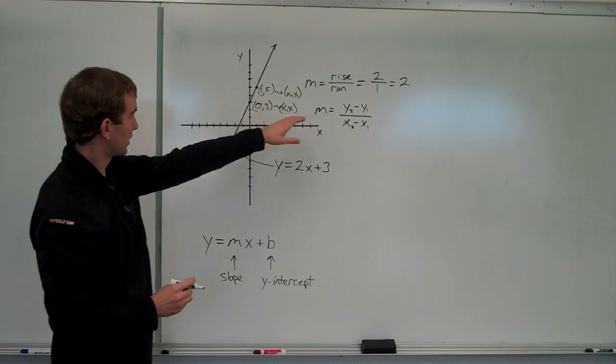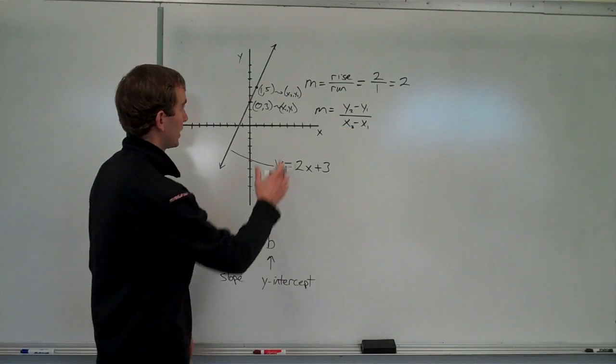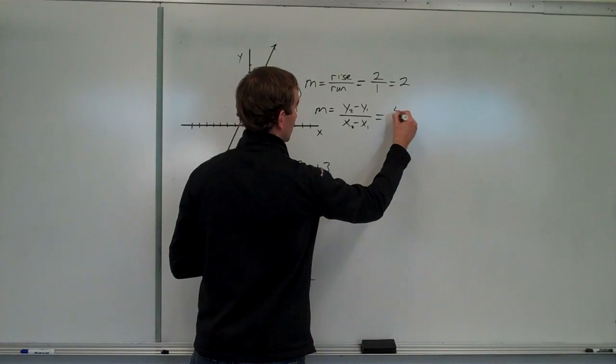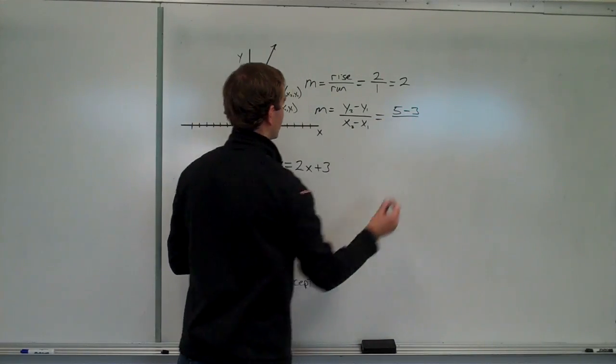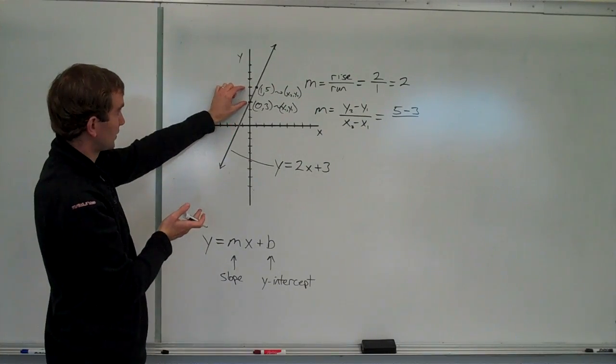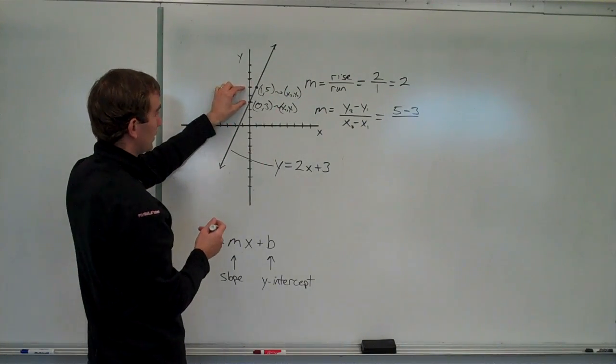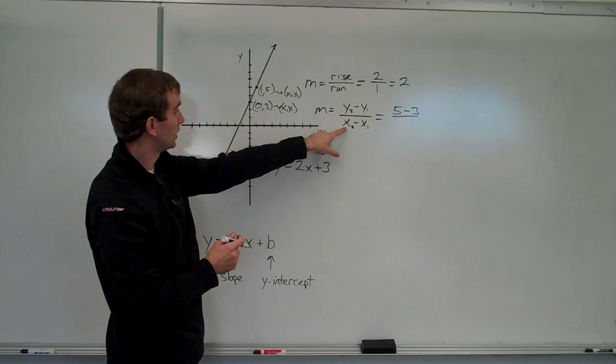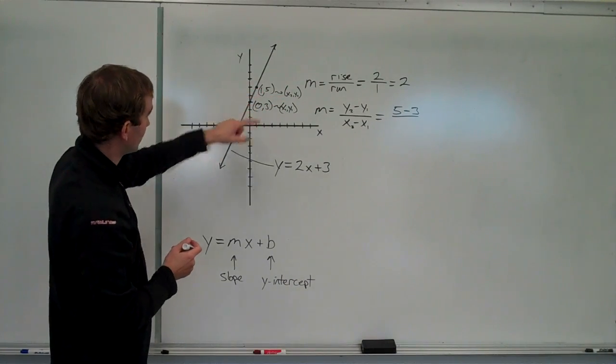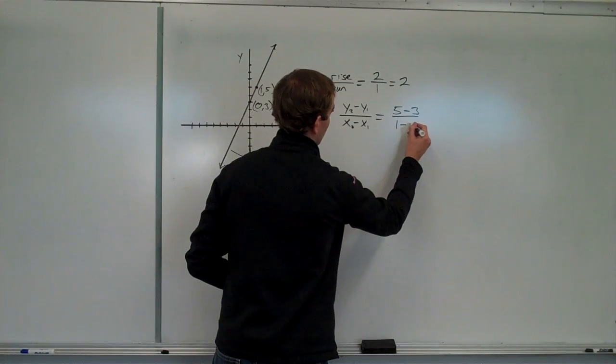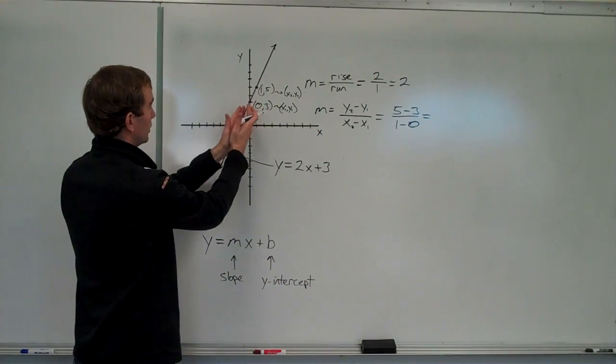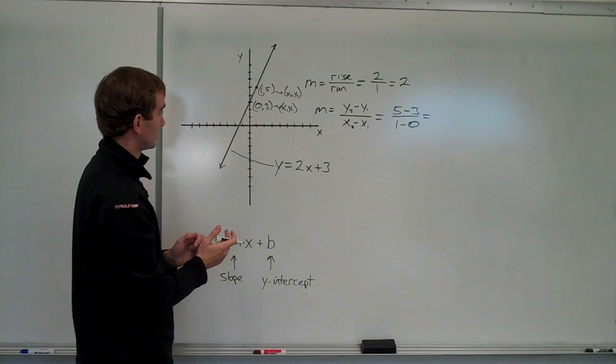And so we're going to take our two y coordinates and subtract. We'll do y2 minus y1, so that's going to be five minus three. That tells us how much we rise, right? What the change in the y coordinates is. That's our rise. Five minus three. That's the exact same result. The reason we're going to do this is because we have two, and then our run is going to be what's on the bottom of this fraction here. X2 minus x1, which is one minus zero. So, we have five minus three. That's two over one minus zero, which is just one.